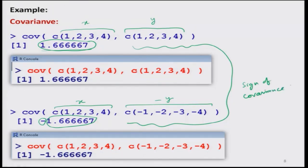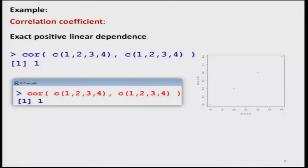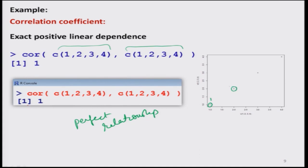Covariance is responsible for informing us the sign — whether the relationship between x and y is increasing or decreasing. Then I find the correlation between the vectors 1,2,3,4 and 1,2,3,4. There is a perfect relationship. Points 1 through 4 are exactly lying on the straight line, and this is indicated by the correlation value of 1, showing exact positive linear dependence between x and y.